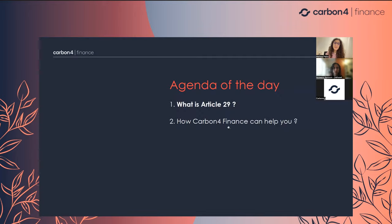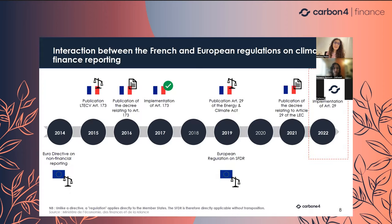Now, deep diving into what Article 29 is. Everything began in 2014 with the first European non-financial reporting. In France in 2015, we had Article 173 of the Loi Énergie-Climat, which began asking different asset managers and asset owners to publish extra-financial information. At the time, it was specifically on climate, which was already quite innovative in Europe and globally worldwide.